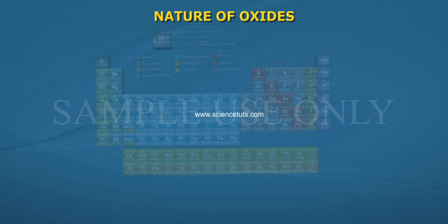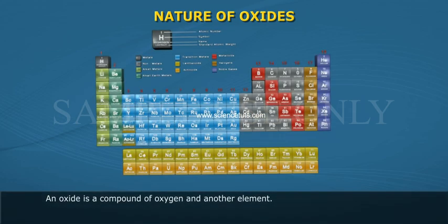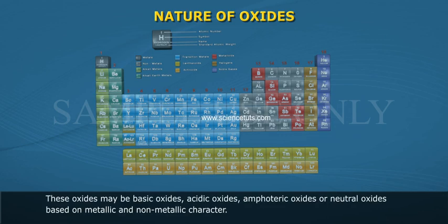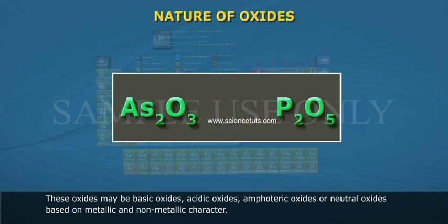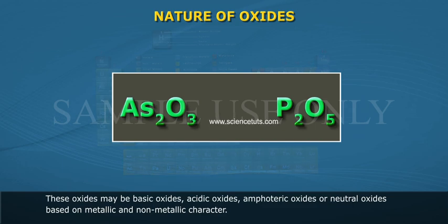Nature of oxides: An oxide is a compound of oxygen and another element. These oxides may be basic oxides, acidic oxides, amphoteric oxides, or neutral oxides, based on metallic and non-metallic character.